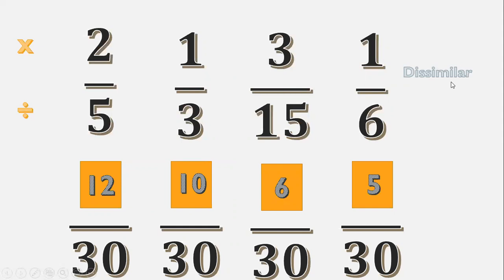So the similar fractions: we have 2/5, 1/3, 3/15, and 1/6 as dissimilar. For similar, we have 12/30, 10/30, 6/30, and 5/30.